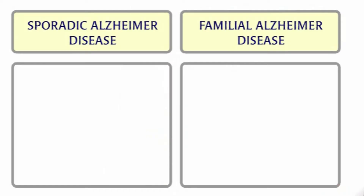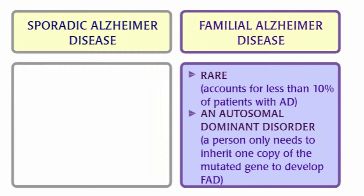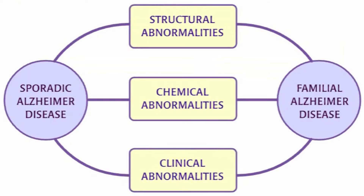There are two distinct forms of Alzheimer's disease: sporadic Alzheimer's disease and familial Alzheimer's disease. Sporadic Alzheimer's disease accounts for the majority of cases and has no obvious pattern of inheritance, whereas familial Alzheimer's disease is rare and an autosomal dominant disorder. Both forms are associated with the same structural, chemical, and clinical abnormalities.